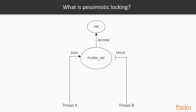Here is an example of pessimistic locking. We have some variable and a mutex variable — the mutex is our lock from the Java world. We have two threads, Thread A and Thread B, and both threads want to access the var variable. But the first thread wins: it locks the mutex and Thread B needs to block, waiting until that mutex is released.